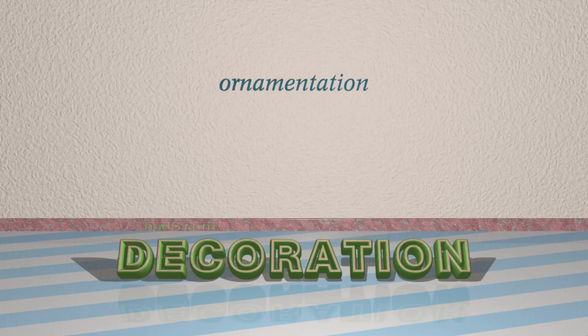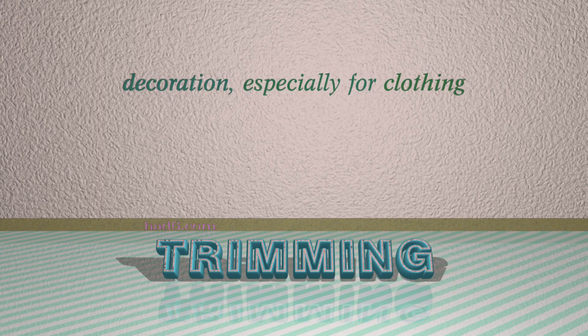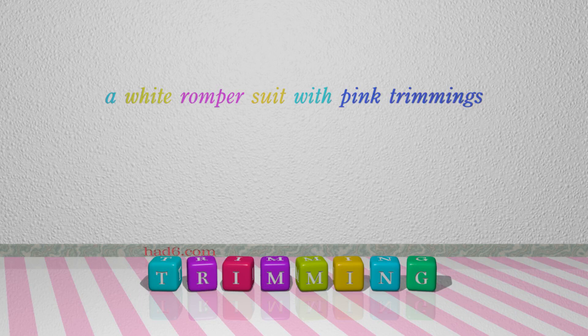Number 4: Decoration. Which means ornamentation. For example: A vaulted ceiling with rich decoration. Number 5: Trimming, especially for clothing. For example: A white romper suit with pink trimmings.